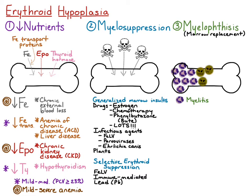Cancer can also efface the bone marrow and replace normal hematopoietic cells. This most often occurs with leukemia, or cancer that arises from the bone marrow, but less commonly it can be due to metastatic disease — cancer that arose outside the bone marrow and then metastasized to the bone marrow.